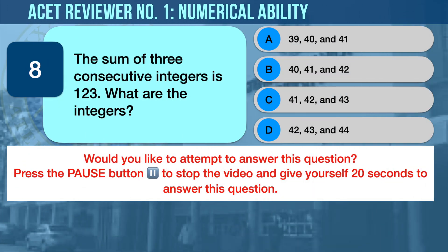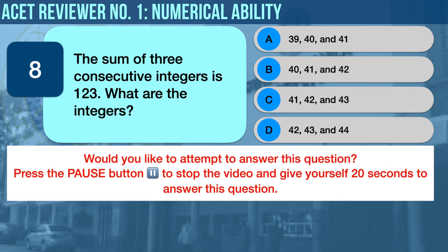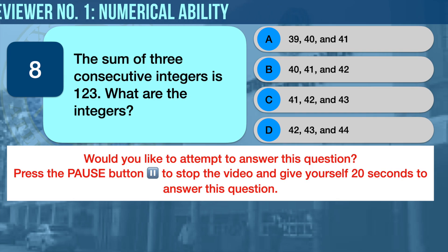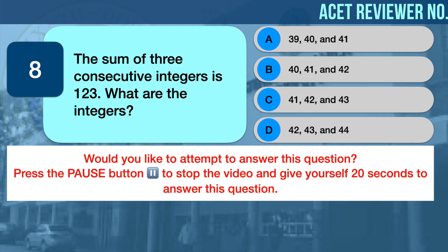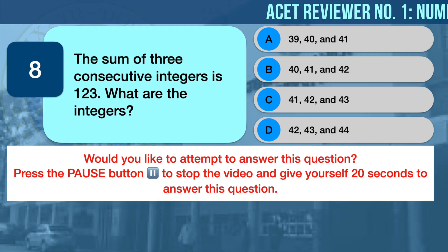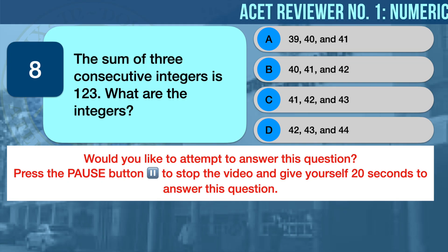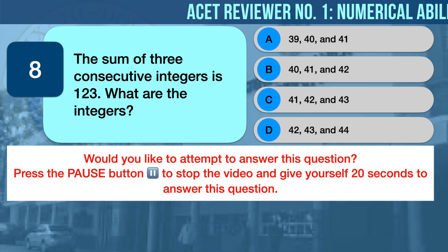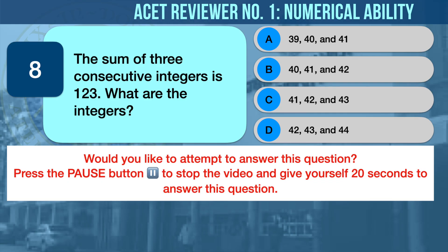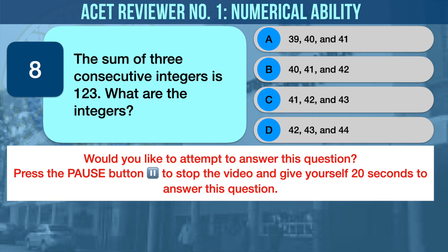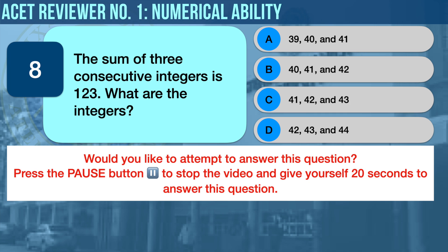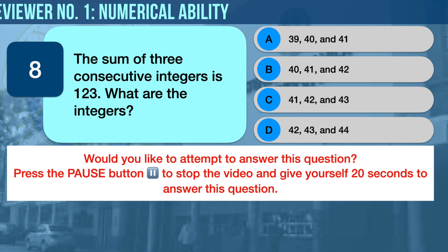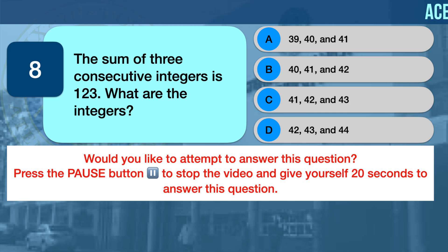Numerical Ability Problem Number Eight: Worded Problem. The sum of three consecutive integers is 123. What are the integers? A) 39, 40, and 41; B) 40, 41, and 42; C) 41, 42, and 43; D) 42, 43, and 44.